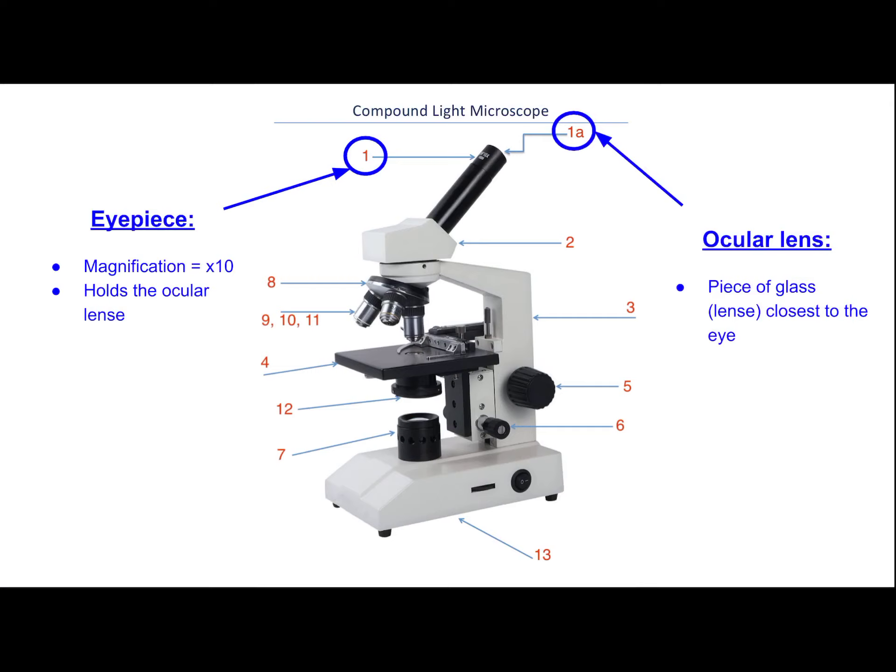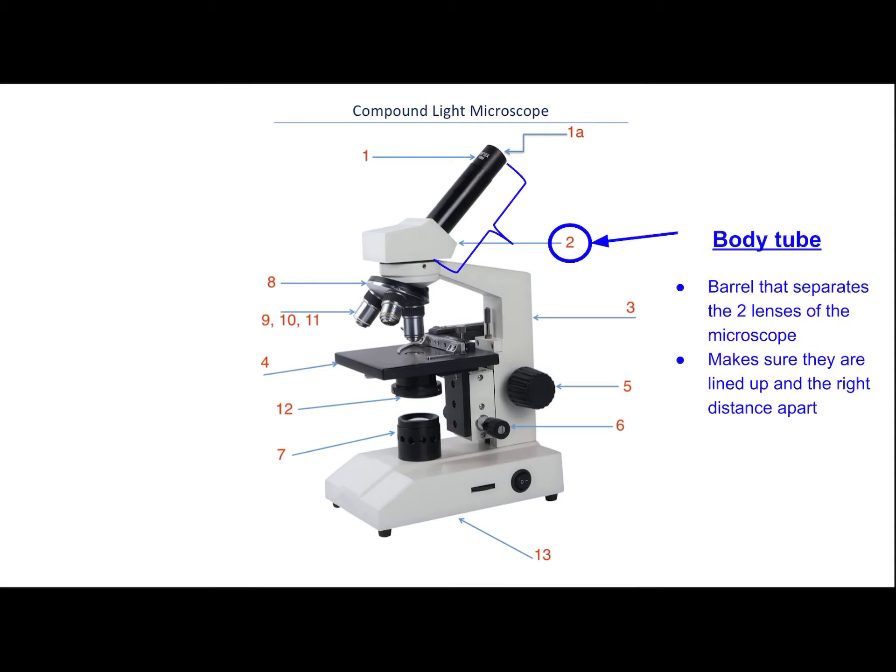The eyepiece holds the ocular lens. The next piece, number two, is the body tube. This is a barrel that separates the two lenses of the microscope — the one closest to your eye and the one closest to the specimen. The body tube makes sure the two lenses are lined up correctly and are the right distance apart. In this particular microscope, it's kind of bent, so there are mirrors within it that reflect the image of the specimen as it passes through the body tube, pushing that image toward your eye.